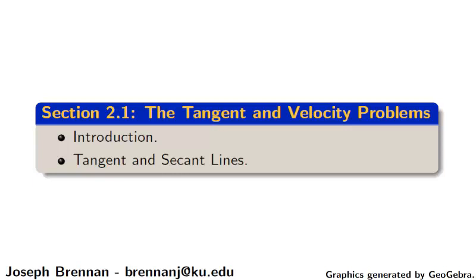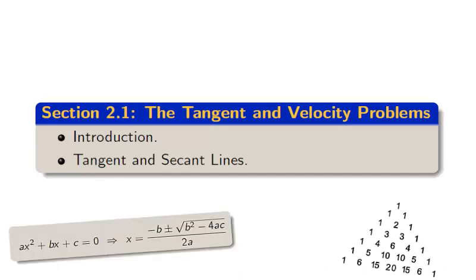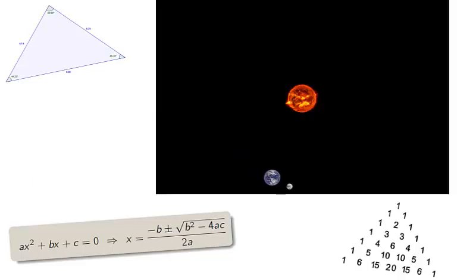Hello and welcome to the first video of the semester on section 2.1 on the tangent and velocity problems. The field of mathematics can roughly be broken down into four overlapping areas of study: quantity, the study of numbers; structure, the study of algebra; space, the study of geometry; and change, the study of calculus.